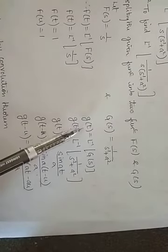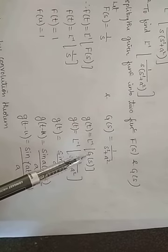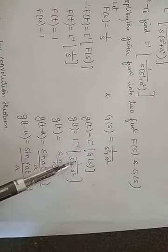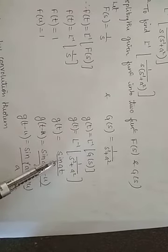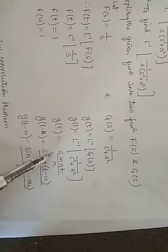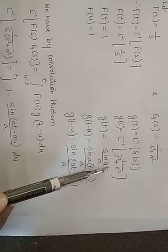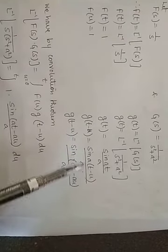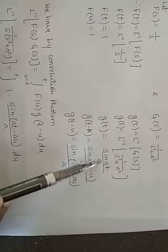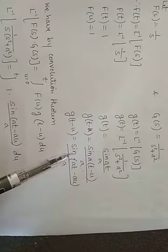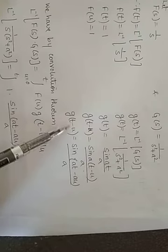Similarly, g(s) = 1/(s² + a²). We find g(t) = L⁻¹ of g(s) = sin(at)/a. To get g(t − u), replace t with (t − u), giving sin(a(t − u))/a = sin(at − au)/a. Note: do not cancel the 'a' in the angle with the 'a' in the denominator — one is an angle and the other is a number.